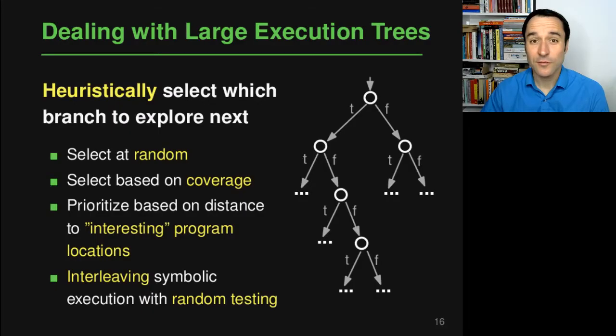So now that we've understood the problem, the question is what can we do about it? And the solution is typically to not try to reason about the entire execution tree, but instead to build the tree step by step and to heuristically select which of the branches that we have not yet explored to explore next.